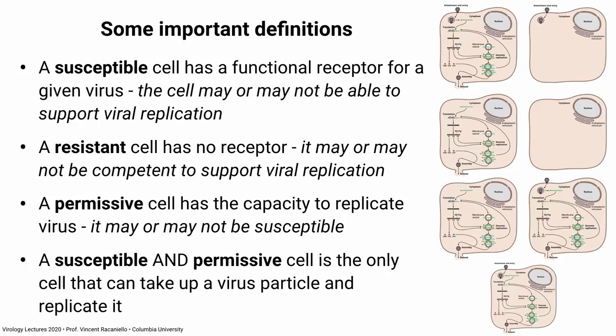A resistant cell simply doesn't have a receptor. It has no implication about what happens beyond virus binding — it doesn't mean anything about whether the cell can actually replicate the virus. It just means that there's no receptor.